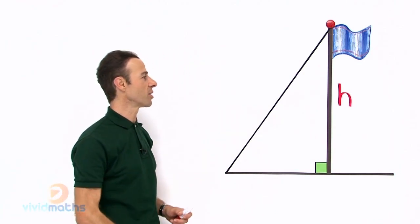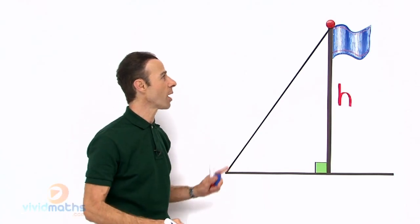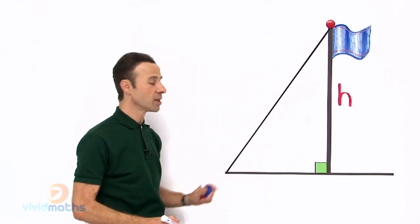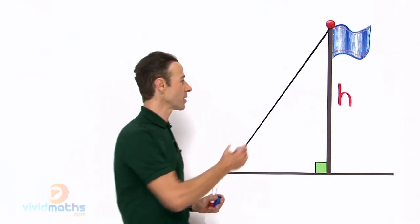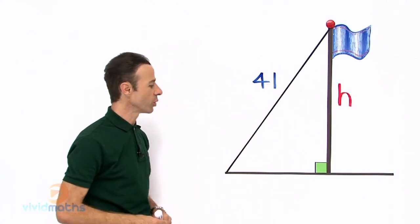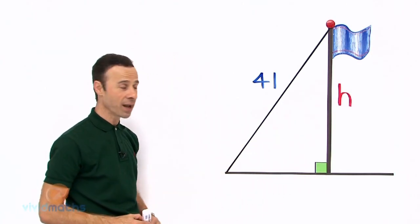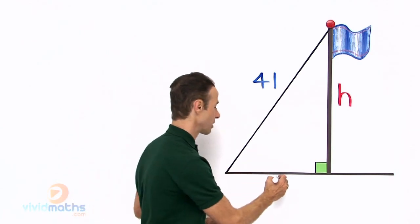Now looking at the problem and taking the distances, we have a distance for the wire, that long wire here is given as 41 meters. Let us write that in and label it 41 meters there. And we also are given the length across here from the base to where it is attached on the ground, that is 15 meters. Let us write that in too.